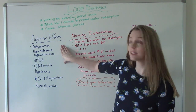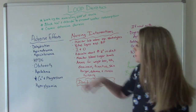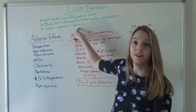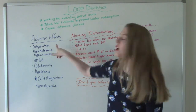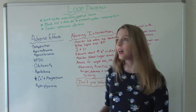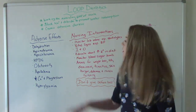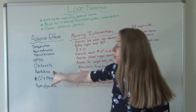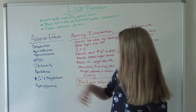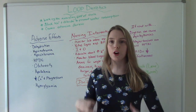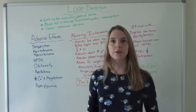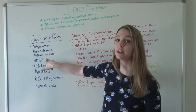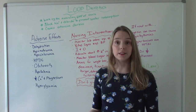Some adverse effects of loop diuretics include dehydration — and that makes sense, because if you're peeing too much, it can cause you to be dehydrated. That can also throw off all of your electrolytes, so you can have hyponatremia, hypochloremia, hypokalemia, decreased calcium, and decreased magnesium. It can also cause hypotension, meaning a decrease in your blood pressure.